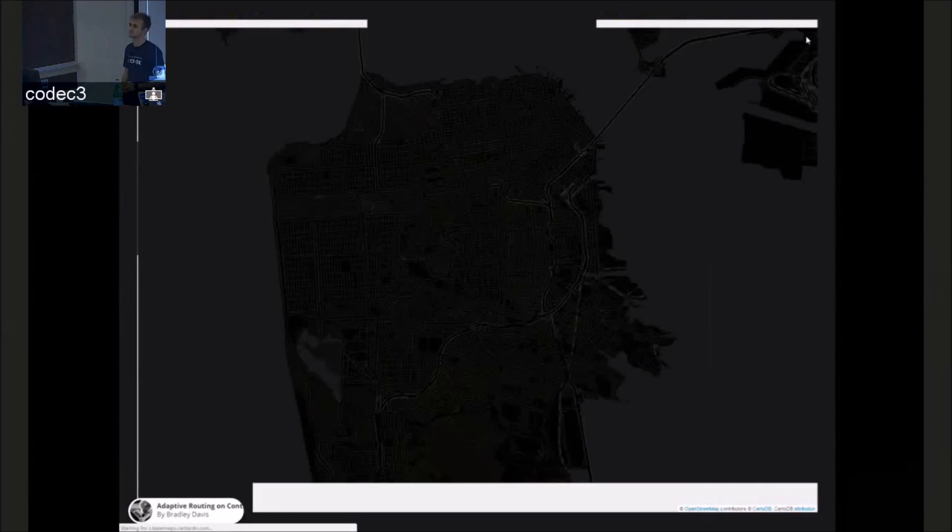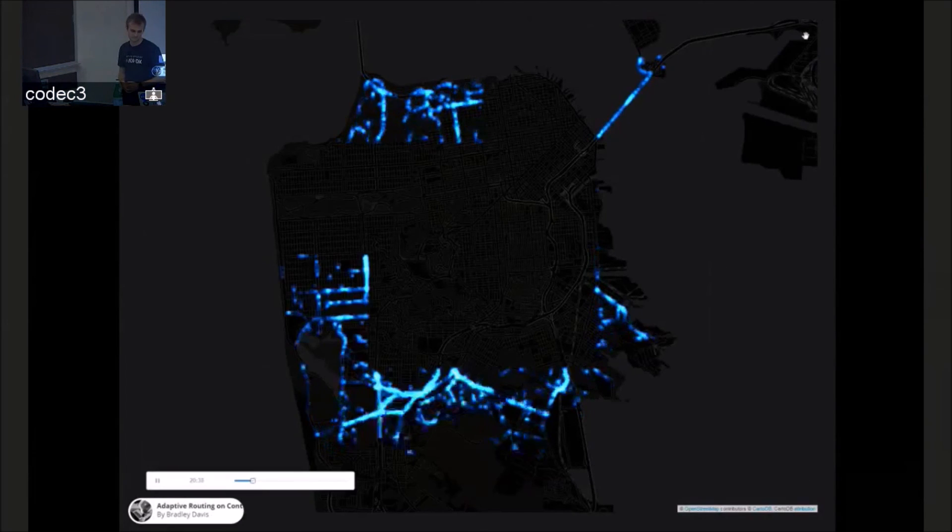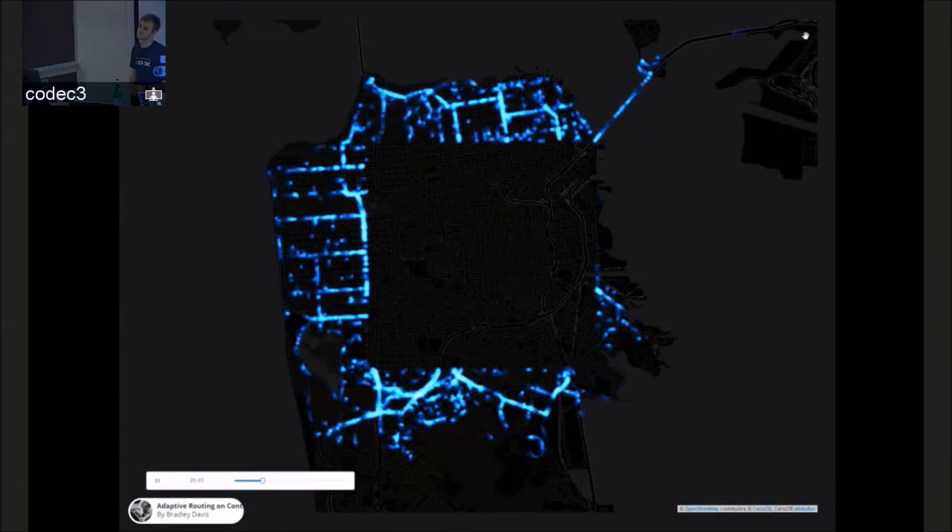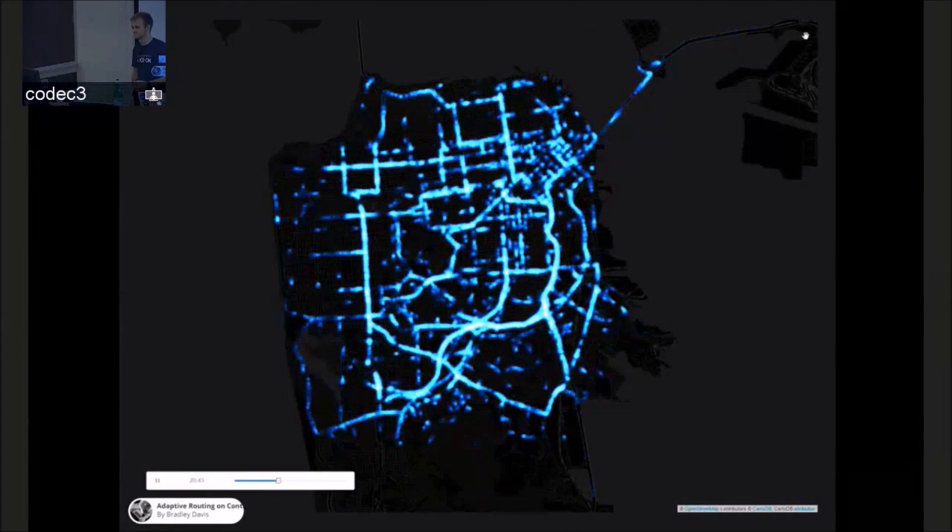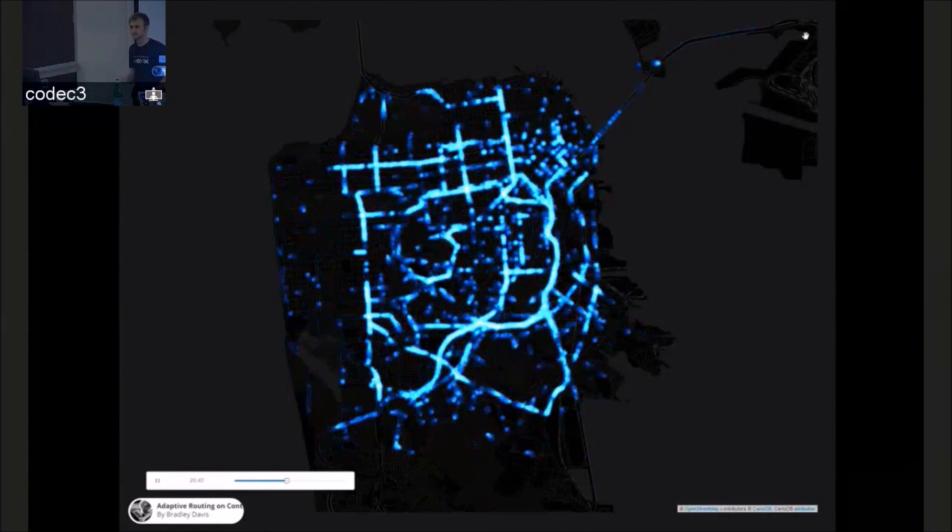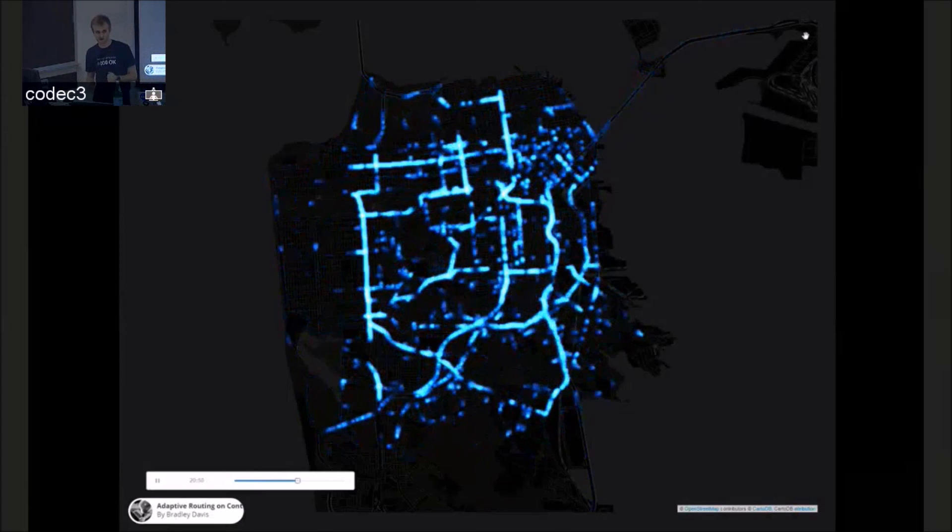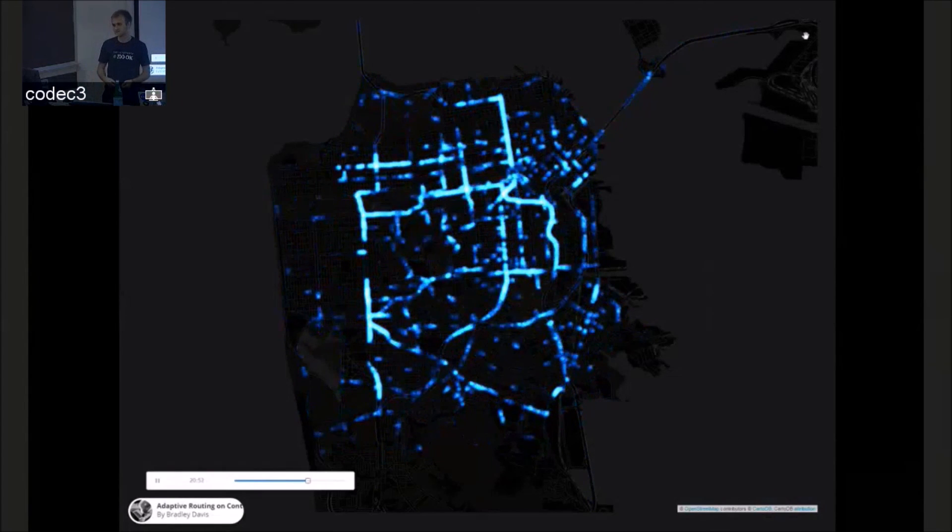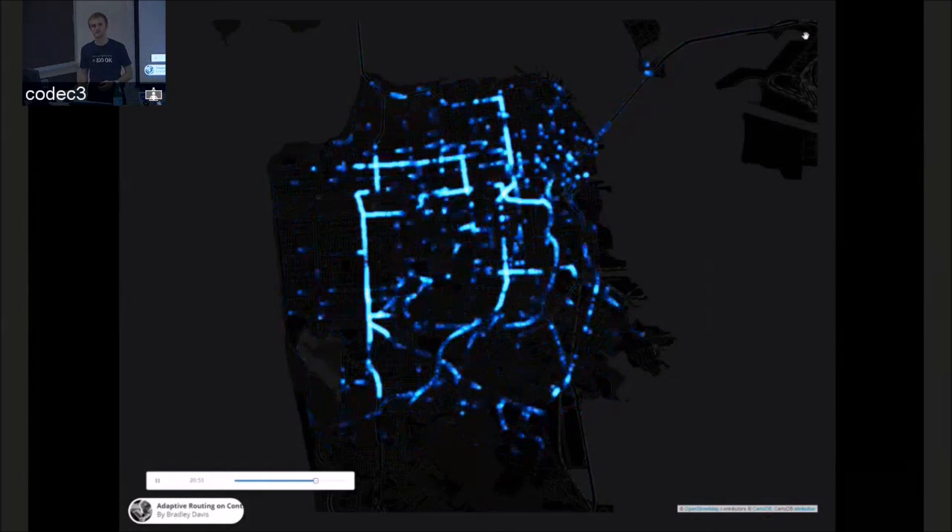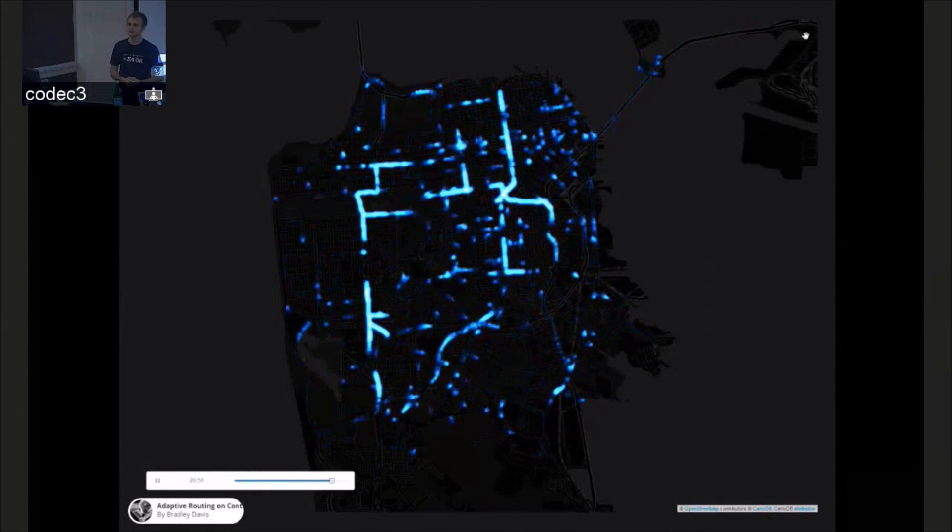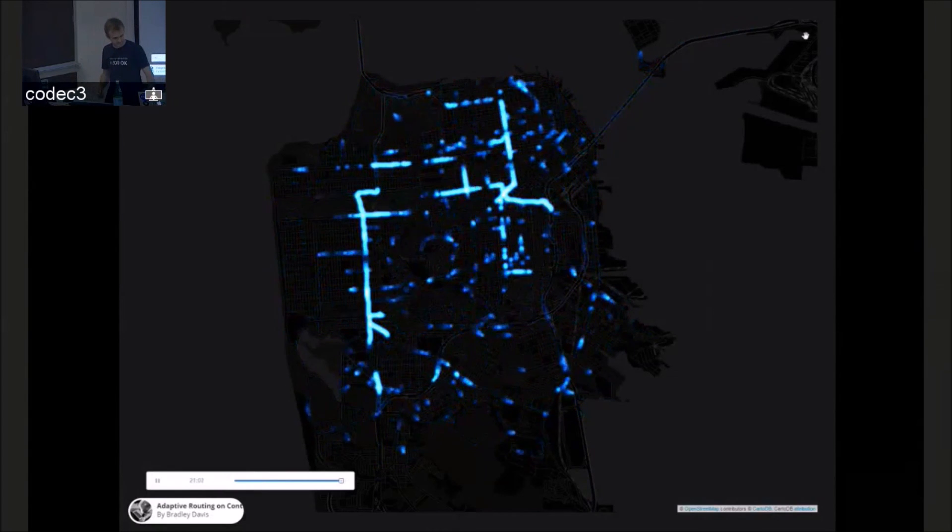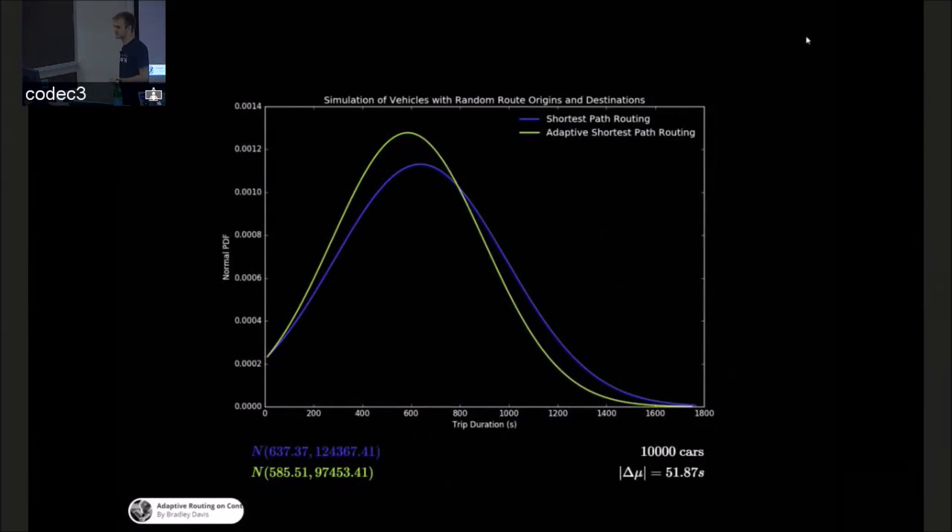And just for fun, here's what that looked like. So you can see that even all these cars that started at random start and endpoints were routed with the service kind of congregate along major thoroughfares, which is a phenomenon you're probably familiar with in real life. You get directions from Google Maps, you'll likely be routed to a highway. But despite that, we're still able to improve the mean route time of these 10,000 cars by about 51 seconds.